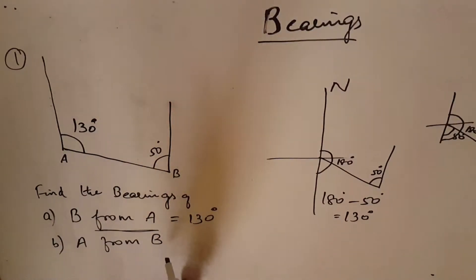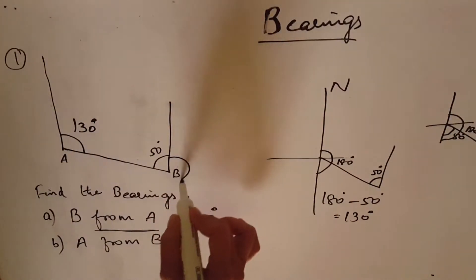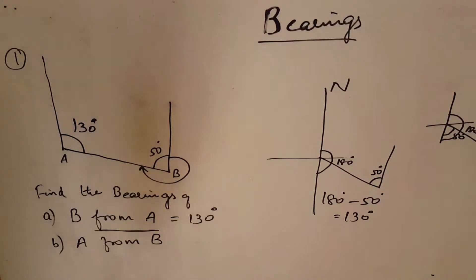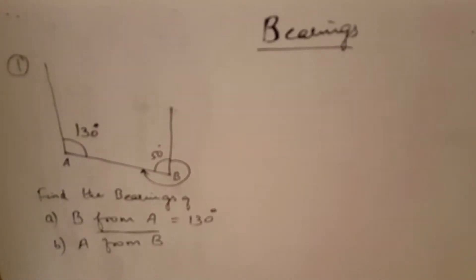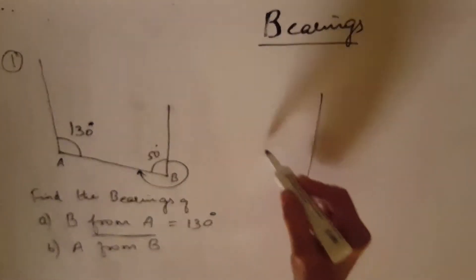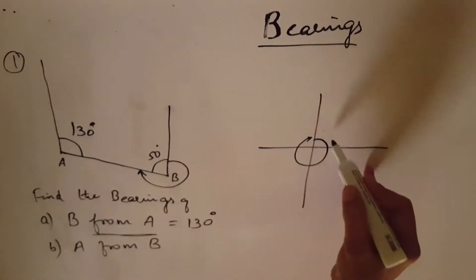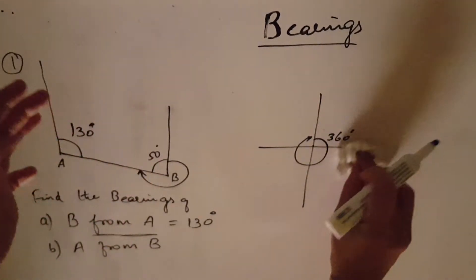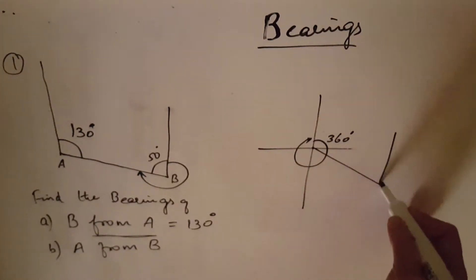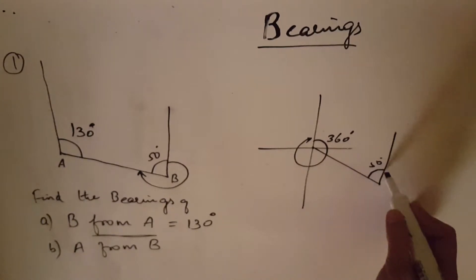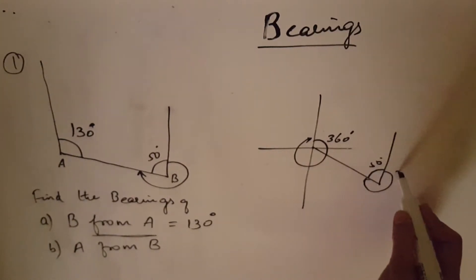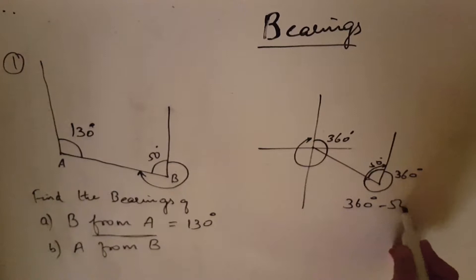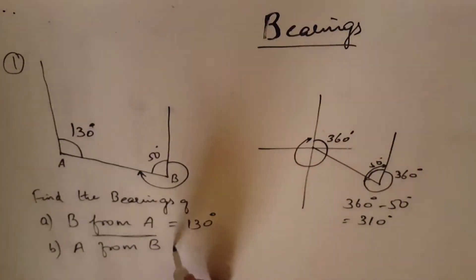Now A from B. This full is 360 degrees. In this question, this is 50 degrees and the full is 360. So you have to minus: 360 minus 50 is equal to 310 degrees. So the answer is 310 degrees.